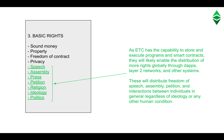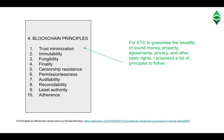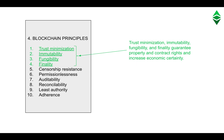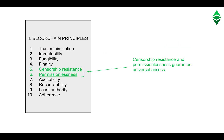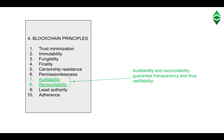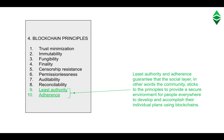To dApps, layer-2 networks, and other systems — these will distribute freedom of speech, assembly, petition, and interactions between individuals in general, regardless of ideology or any other human condition. Four: blockchain principles. For ETC to guarantee the benefits of sound money, property, agreements, privacy, and other basic rights, I proposed a list of principles to follow: trust minimization, immutability, fungibility, and finality guarantee property and contract rights and increase economic certainty; censorship resistance and permissionlessness guarantee universal access; auditability and reconcilability guarantee transparency and thus verifiability; least authority and adherence guarantee that the social layer — in other words, the community — sticks to the principles to provide a secure environment for people everywhere.